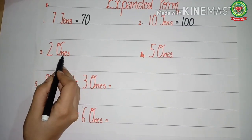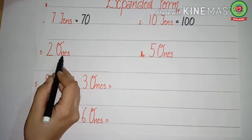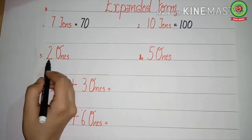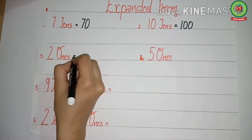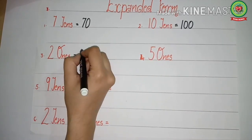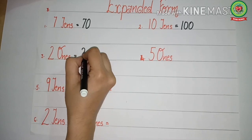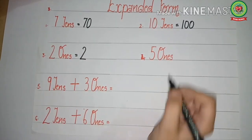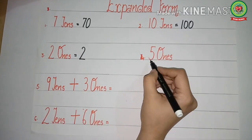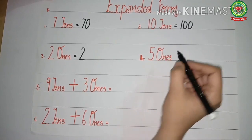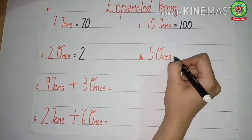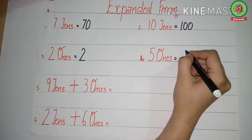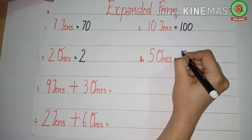Two ones — ones has no zero, so two ones means two. Five ones — again, ones has no zero, so we will write five only.